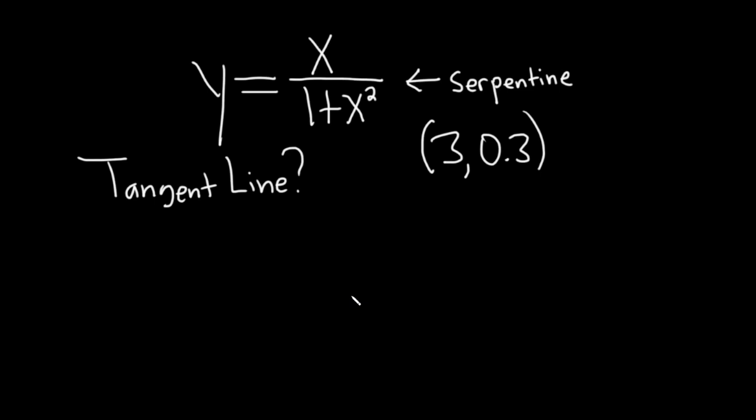Hi, in this problem we're going to find the equation of the tangent line to the graph of this function at the point (3, 0.3). This function is called a serpentine. Let's go ahead and work through its solution.